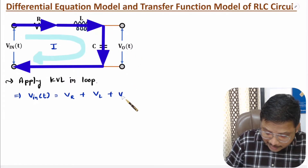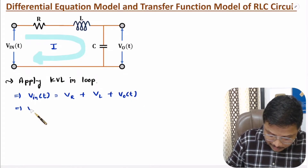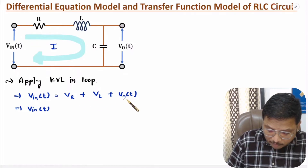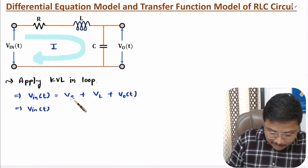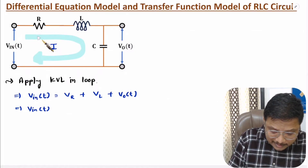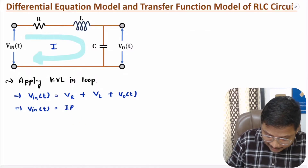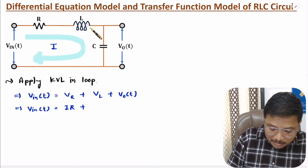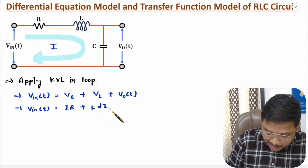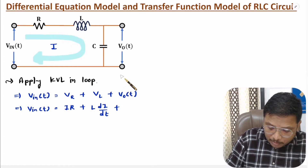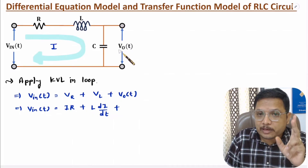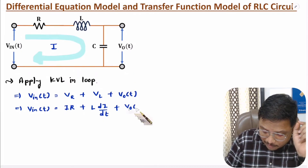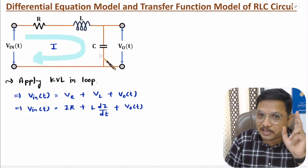The voltage across capacitance is the output voltage, noted as V_out(t). Now I'll represent these voltages in terms of current. Resistance R has voltage V_R, and through resistance R current is I, so V_R equals I times R. Through inductance, the current is I, so voltage across inductance is L dI/dt. The voltage across capacitance is V_out(t), or alternatively (1/C) times the integral of I dt.